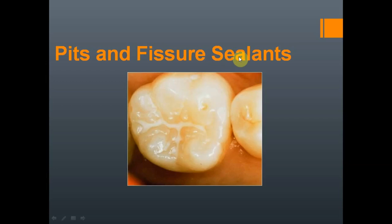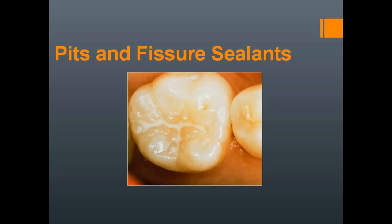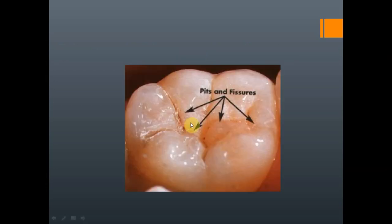It is just a sealant, not a restoration. A restoration is something we do to restore back to normal anatomy. Here, the normal anatomy is not at all affected — we are only putting an extra material into the pits and fissures so that it will not turn into a caries area. Always remember: pit and fissure sealants are not restorations. We do it on a normal tooth to prevent dental caries. Restorations are done to restore something lost by dental caries.